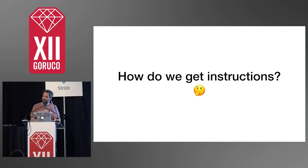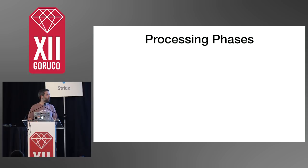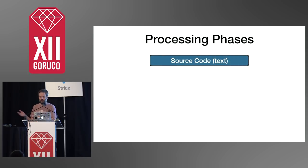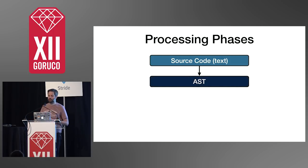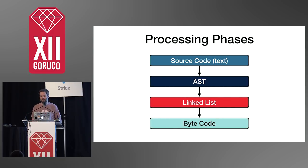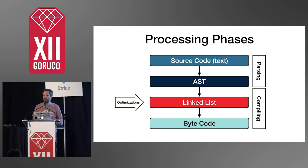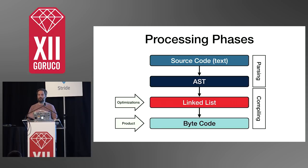How do we get instructions? The way we get them is by compiling our Ruby code. Our Ruby code gets compiled before it's executed, and that compilation process results in instructions. The processing phases are: we take some source code, convert it to an AST or abstract syntax tree, that AST gets converted into a linked list, and that linked list gets translated into bytecode. We can roughly divide these steps into parsing and compiling. Optimizations to your Ruby code are done during the linked list phase, because linked lists are a bit easier to manipulate than the AST is. The final product is the bytecode, which is what we actually execute.